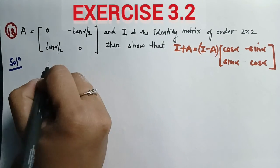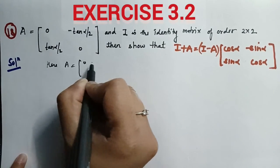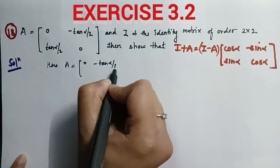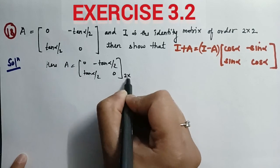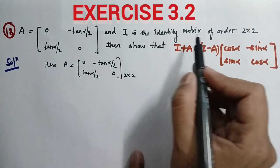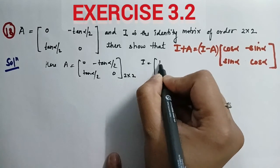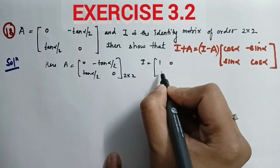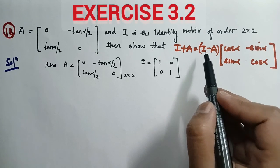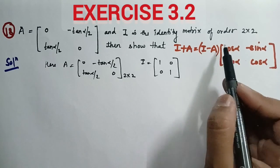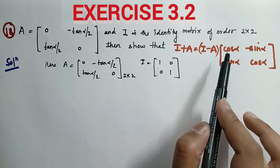Here, A equals the matrix [[0, -tan(α/2)], [tan(α/2), 0]], which is a matrix of order 2×2. You are given the identity matrix of order 2, that is [[1, 0], [0, 1]]. We have to show that I + A equals (I - A) multiplied by the rotation matrix. You have to show the left side equal to the right side.